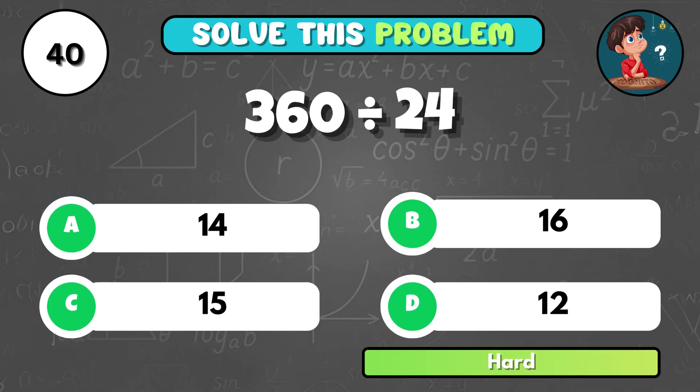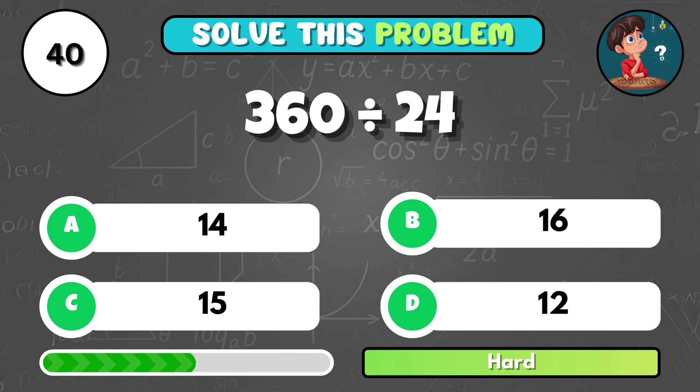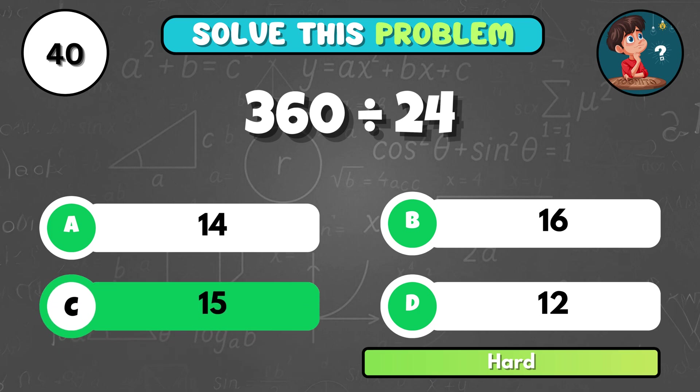Can you calculate 360 divided by 24? That's C, 15.